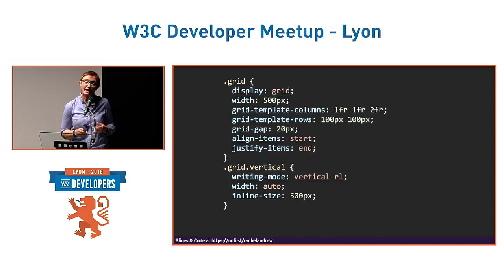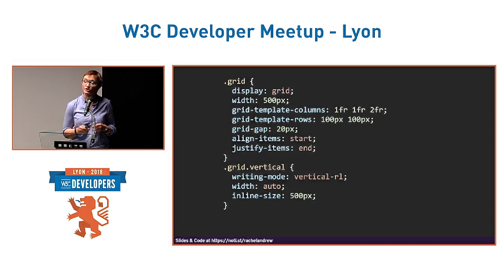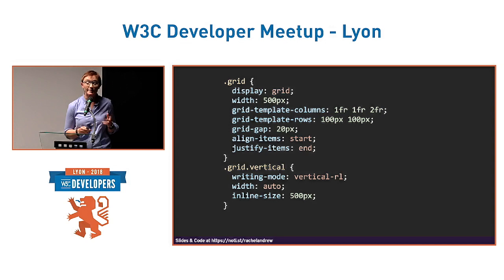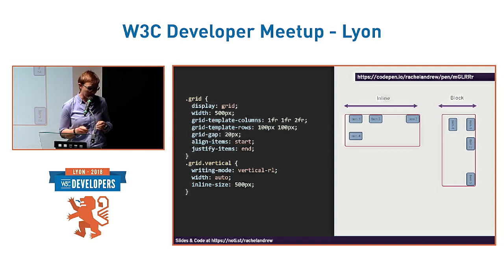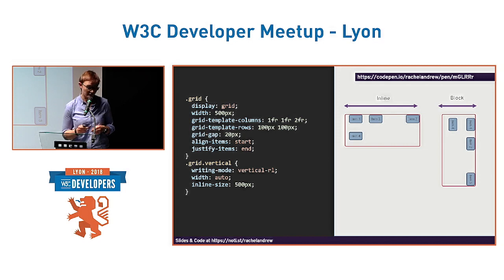If we want to align items inside their grid area, we can use align-items and justify-items. Aligning is done in the block direction; justifying is done in the inline direction. These alignment properties give us a consistent way of aligning things whether in Flexbox or Grid layout, and whether we're in a horizontal or vertical writing mode.